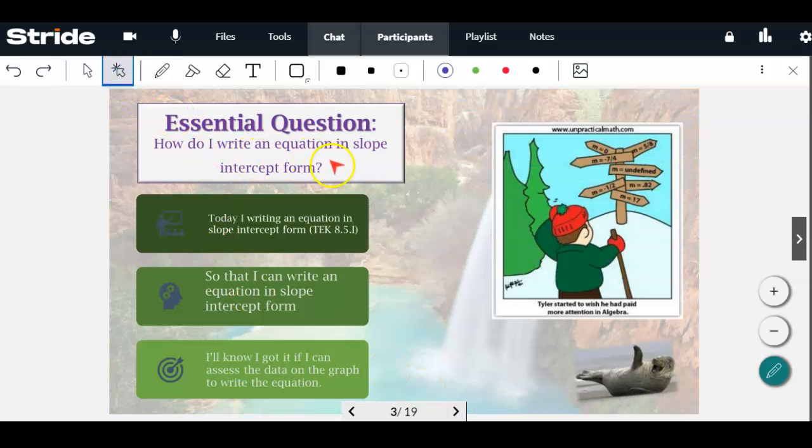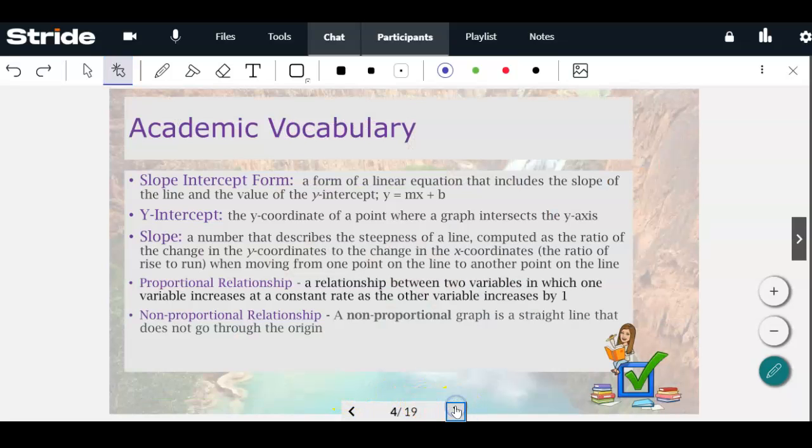So what are we doing today? Essential question: how do I write an equation in slope-intercept form? Today I am writing an equation in slope-intercept form so that I can write an equation in slope-intercept form. I'll know I got it if I can assess the data on the graph to write the equation. Here's academic vocabulary. This is in-class KIC under the math notebook. We're going to talk about proportional and non-proportional relationships.